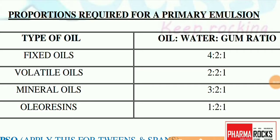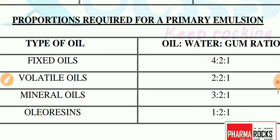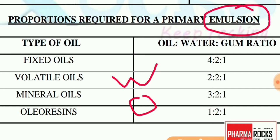Hello friends, welcome to Farmerogs. In this lecture we have to study about the proportion required for a primary emulsion. An emulsion is a biphasic system in which one phase is dispersed as minute globules in another phase — one is the organic phase and the other is the aqueous phase, also called oil and water. There are two main types of emulsion: water-in-oil and oil-in-water, along with multiple emulsions, micro emulsions, and nano emulsions. In all of these, we first have to make a primary emulsion.